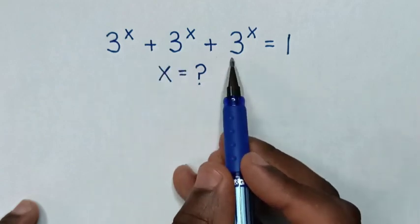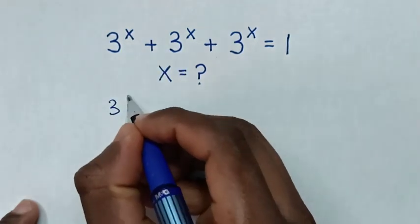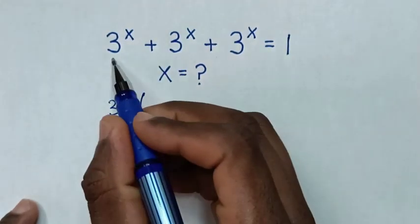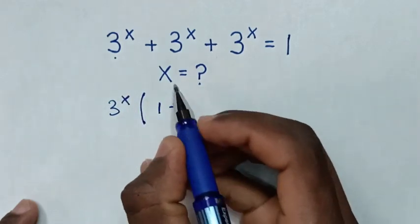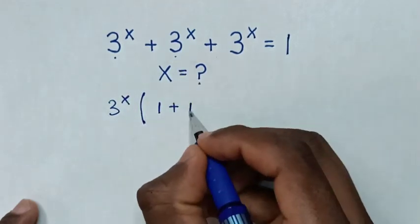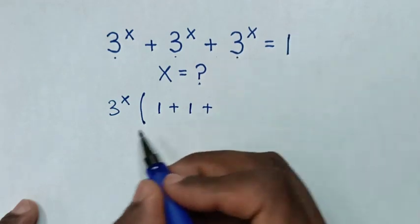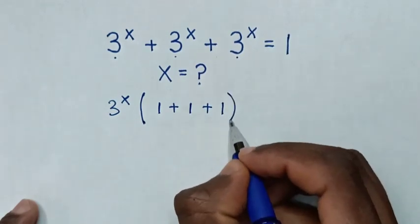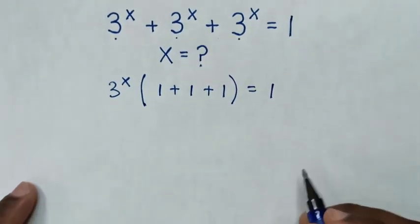Now from here, 3^x is common, so we take 3^x out of the bracket. Then 3^x divided by 3^x is 1, plus this divided by this is 1, plus this divided by this is 1, then bracket is equal to 1. Then in next step,